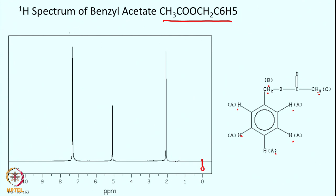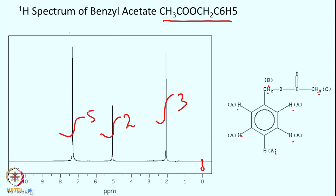With TMS at 0 ppm, the methyl proton peak appears around 2 ppm, corresponding to three protons. The methylene peak is slightly downfield-shifted due to the adjacent ring and the electronegative COO group, corresponding to two protons. The aromatic ring protons appear most downfield, corresponding to five protons.